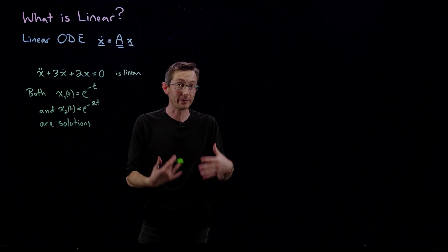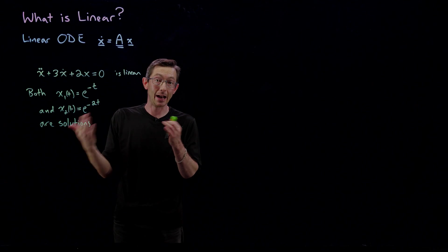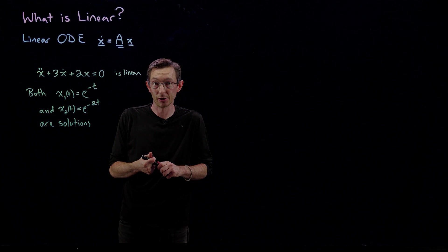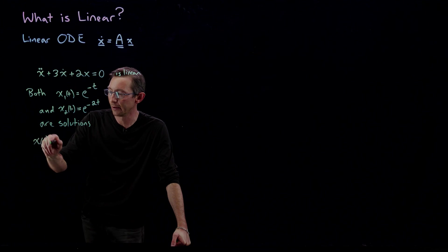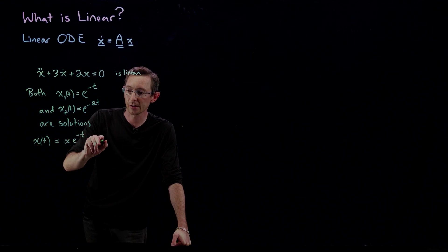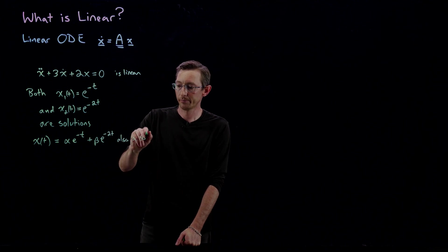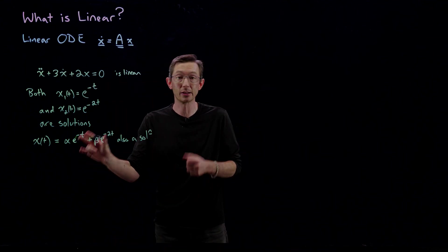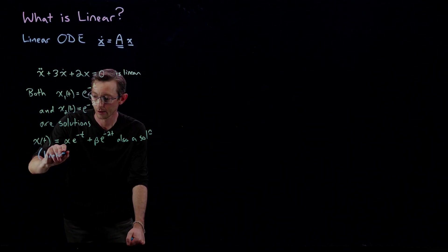That's a huge benefit of linearity in differential equations: if the equation is linear and I have two solutions, I can add up those solutions and the result is still a solution. So x(t) = α·e^(−t) + β·e^(−2t) is also a solution for any constants α and β. This is called linear superposition.